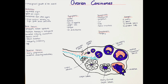Histologically there are several different types of ovarian carcinomas. In most cases it is a tumor of epithelial origin. Other possibilities are tumors of germ cell origin and metastasis from other organs that have spread to the ovaries. Each of the subgroups can be further divided into different subtypes according to how aggressive they are.